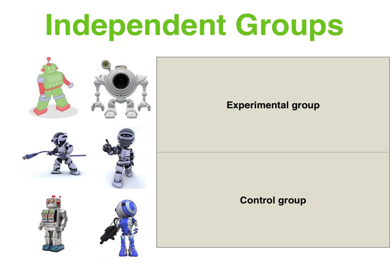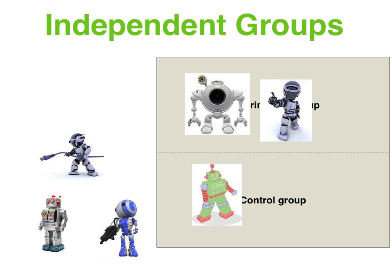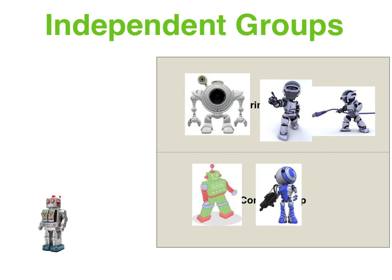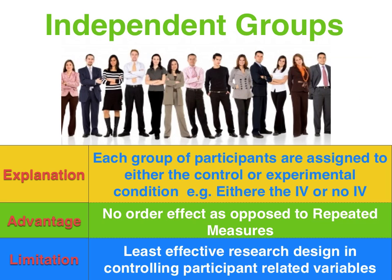Independent groups is the simplest design where we simply allocate each of our subjects to either the control condition or the experimental condition. In other words, they're either exposed to the IV or they're not exposed to the IV — they simply serve as a baseline measure for comparison. Importantly, when identifying an advantage of the method, you need to compare it to an alternative to really add weight to your response.